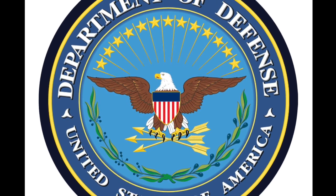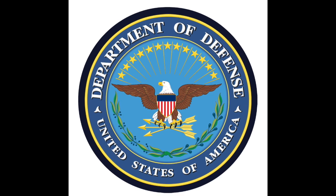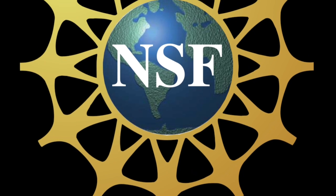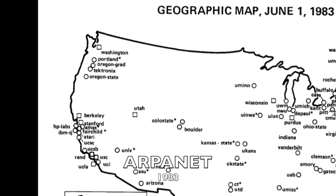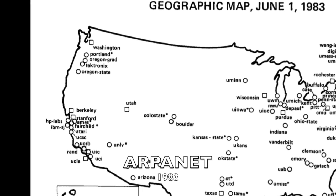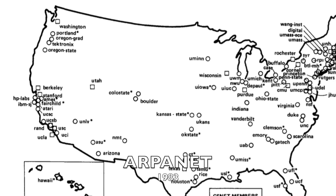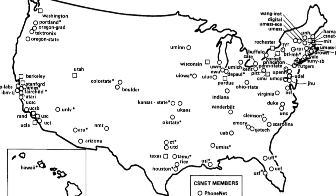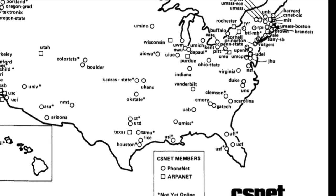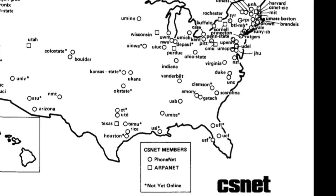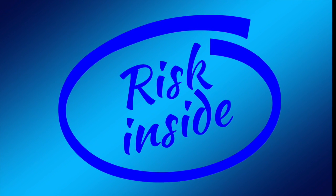The Internet as we know it began in 1969 as the United States Department of Defense project called ARPANET expanded. The National Science Foundation brought in many more universities under the Computer Science Network. These early computer networks were relatively unprotected — systems were open and there was a high level of trust between network members. At this time, the Internet was much smaller than we know it now. There were no networked home computers, and these networks were solely used for researchers to collaborate with each other.